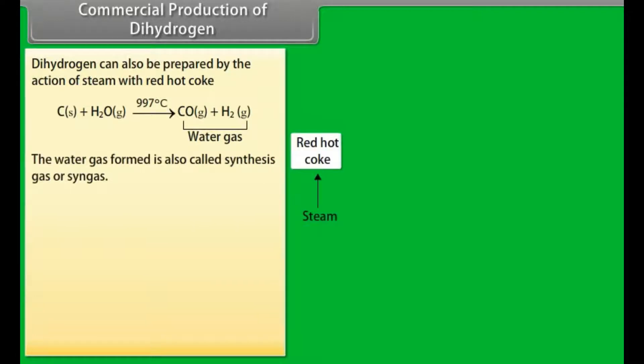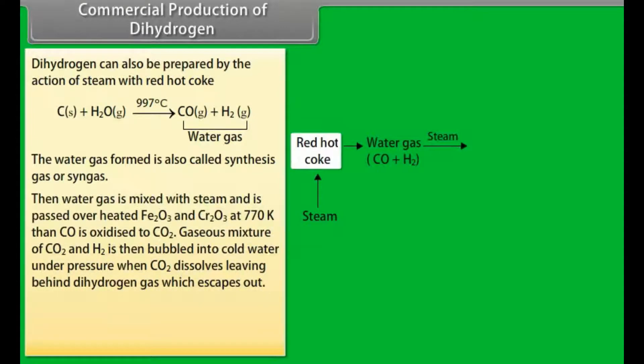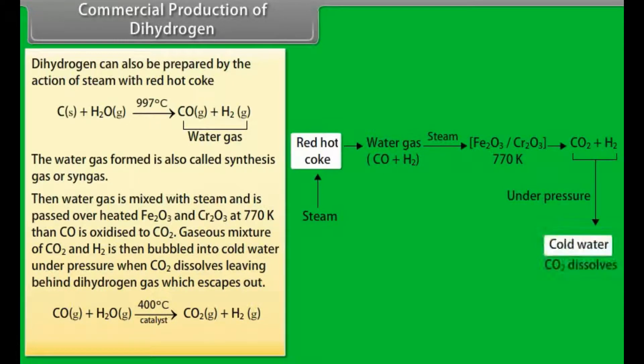Commercial production of dihydrogen. Dihydrogen can be prepared by the action of steam with red hot coke. The water gas formed is also called synthesis gas or syngas. Then water gas is mixed with steam and is passed over heated Fe2O3 and Cr2O3 at 770 Kelvin. Then CO is oxidized to CO2. Gaseous mixture of CO2 and H2 is then bubbled into cold water under pressure when CO2 dissolves leaving behind dihydrogen gas which escapes out. This reaction is called water gas shift reaction.